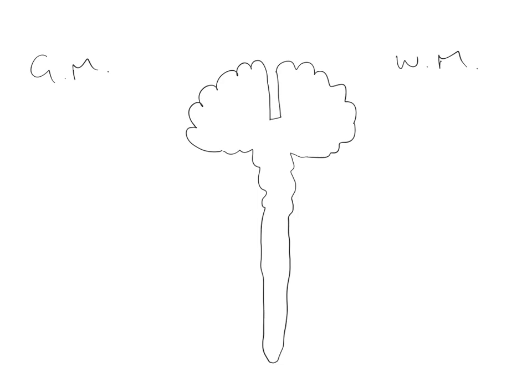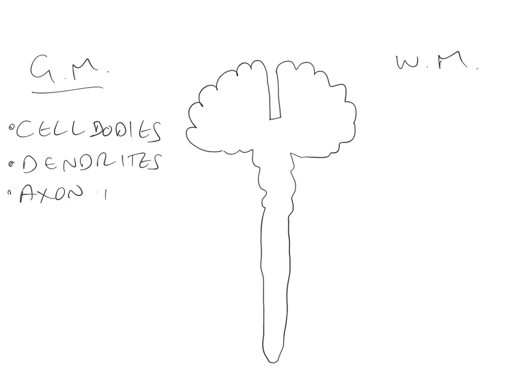The first thing we need to think about is what are grey and white matter composed of? Grey matter is primarily composed of cell bodies of neurons; it contains dendrites and it contains axon terminals. It is in the grey matter that most of the processing takes place - synaptic function, synaptic processing is taking place within the grey matter.